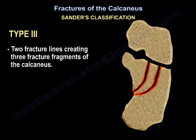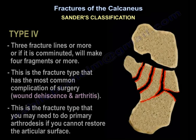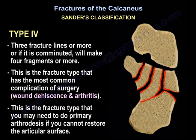Type 3 has two fracture lines, creating three fracture fragments of the calcaneus. Type 4 has three fracture lines or more, or if it is comminuted, making four fragments or more. This is the fracture type that has the most common complications: wound dehiscence and arthritis.